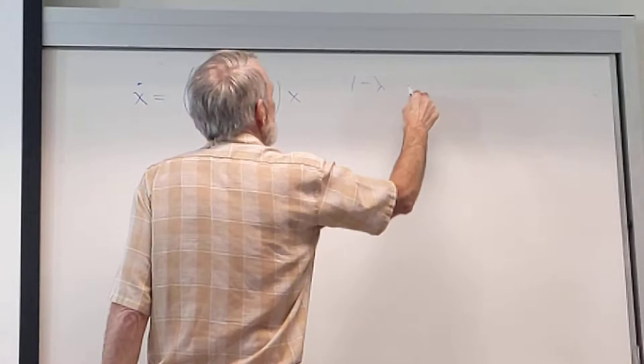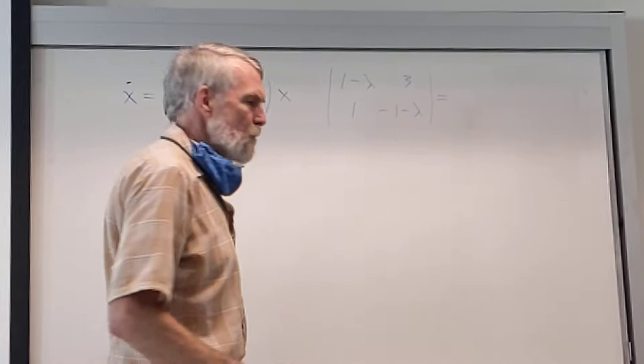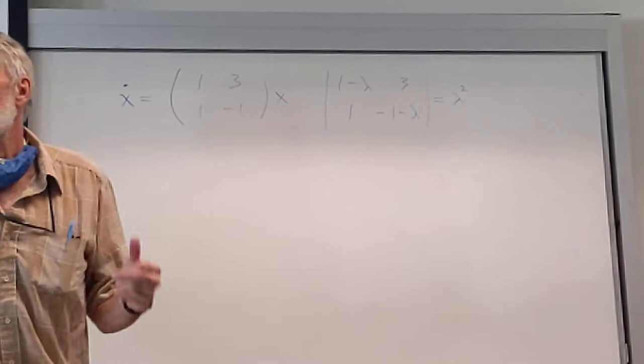So we're looking at the determinant of 1 minus lambda, 3, 1, minus 1, minus lambda. I think everybody can see the leading term, of course, is lambda squared.